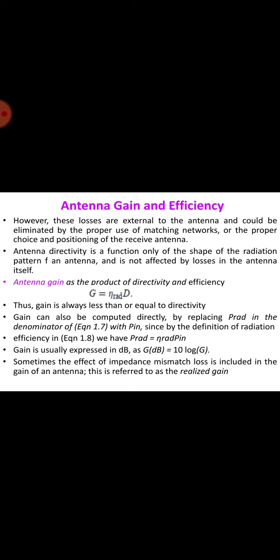Antenna directivity is a function of only the shape of the radiation pattern of the antenna and is not affected by losses in the antenna itself. Antenna gain is a product of directivity and efficiency as I said earlier. G equals eta radians into D, and the gain is always less than or equal to directivity. Gain can also be computed directly by replacing P radians in the denominator with P in.